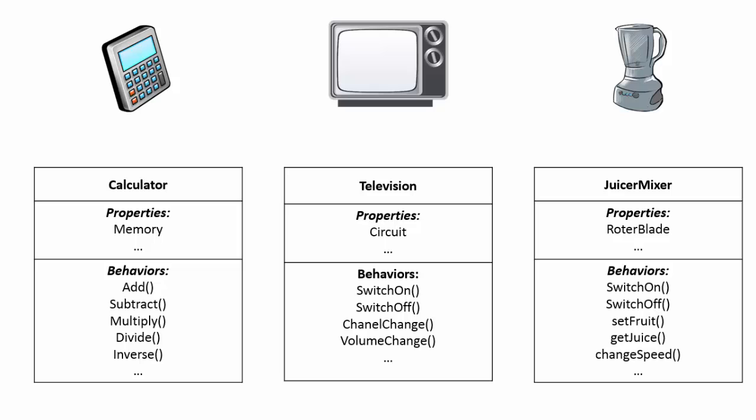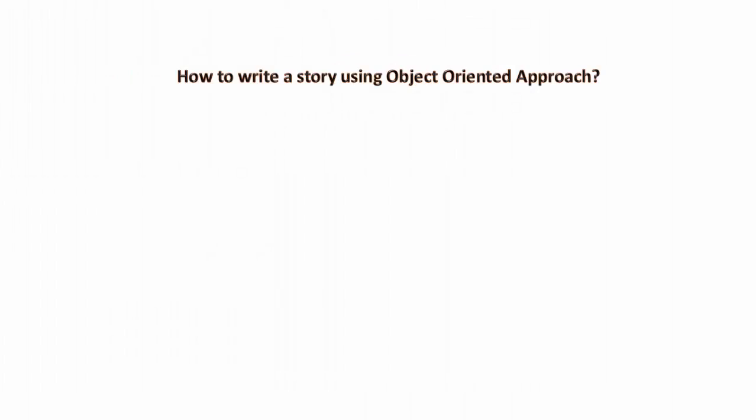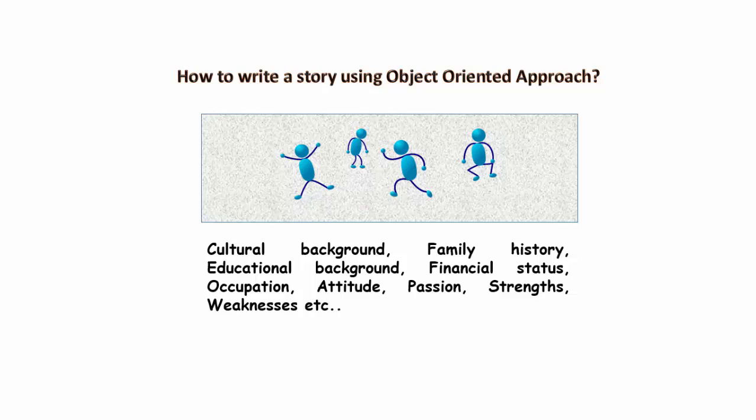So if that is true, then can we apply the same to some unconventional area like story writing? Let us see how to write a story using object-oriented approach. First, create some characters, provide them with some properties like their cultural background, family history, educational background, financial status, occupation, attitude, passion, strength, weaknesses, etc.